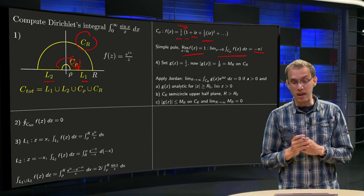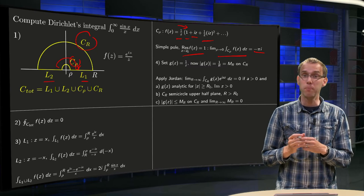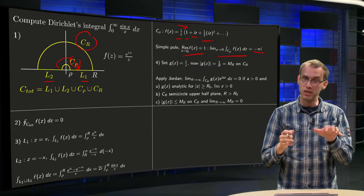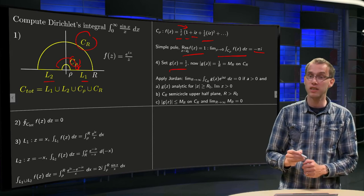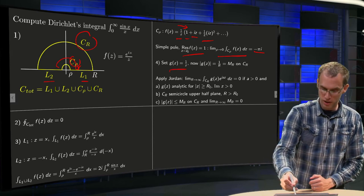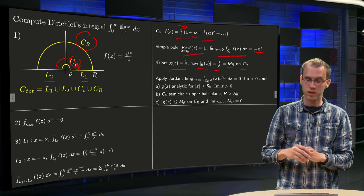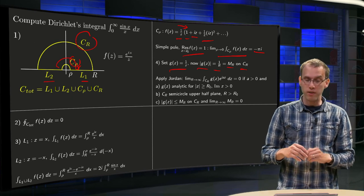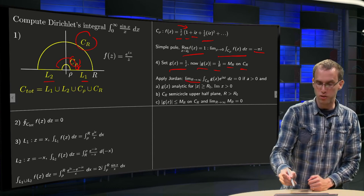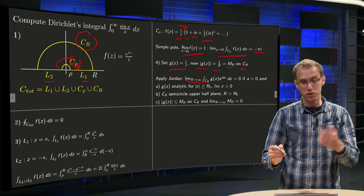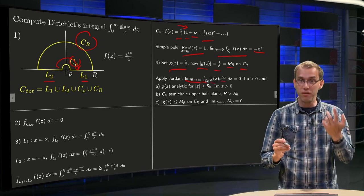Also here we need to be a bit careful with our CR. We cannot use an ML estimate over here. The ML bound is too slow, but we can apply Jordan's lemma. If we set g(z) equals 1 over z, then we know that norm of g(z) equals 1 over R equals MR on the big circular arc CR. Then we can apply Jordan's lemma, because we know Jordan's lemma tells us that if we take R to infinity, then the integral along CR g(z) e to the power aiz equals 0 if a is bigger than 0. Well, we have e to the power iz, so a equals 1, so that's okay.